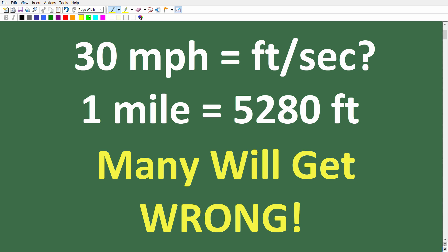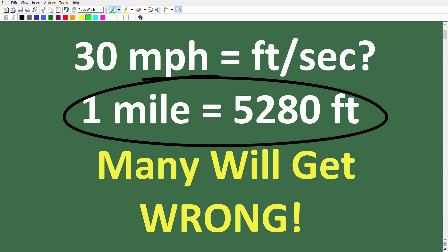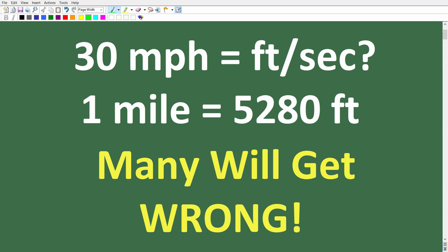Feel free to use a calculator, but here is a very important piece of information that you need to solve this problem: one mile, or one statute mile — that just means one mile on land. You may have heard of a nautical mile, which is the distance of a mile on the ocean. A statute mile is a distance of a mile on land, and they are slightly different. One statute mile is equal to 5,280 feet. So that is the information you need. I'm going to show you exactly how to convert units of measure and solve this problem.